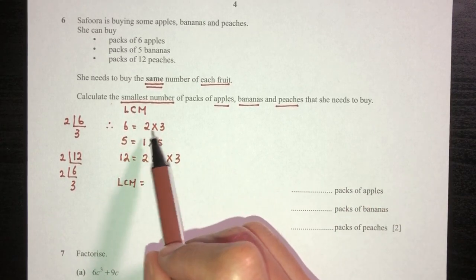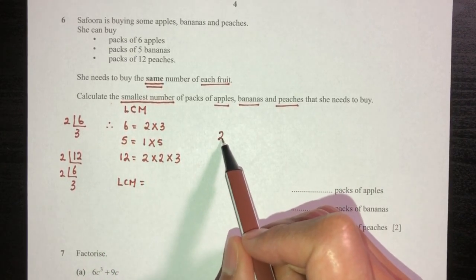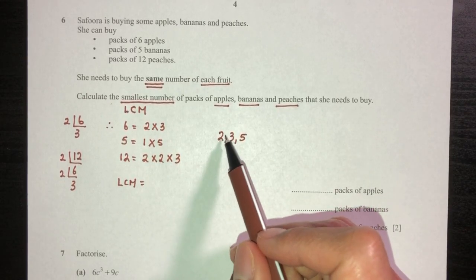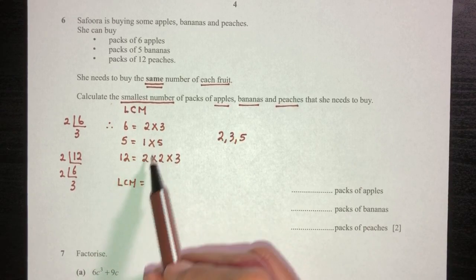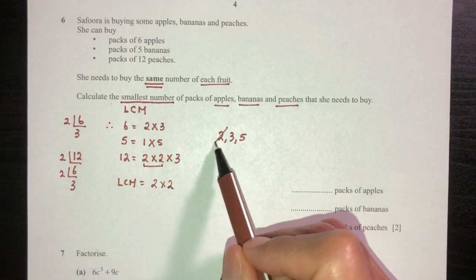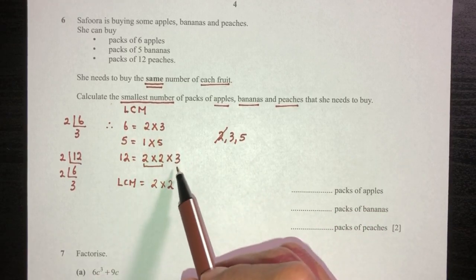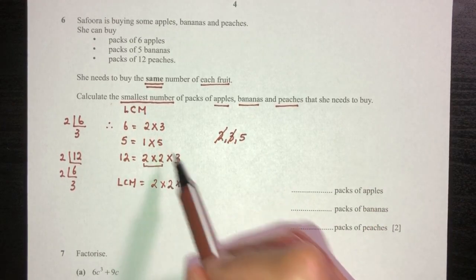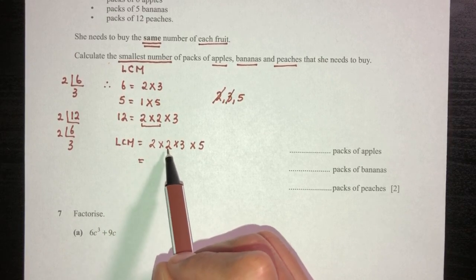Now how do you find the LCM? You have to look at what prime numbers do you have here. You have number two, number three, and number five. For the first one, where does this number happen the most? This one happens once and here happens twice, so we take this one two times two. Now we move on to the next number three - it happens one time here, one time there, so we take only one time. And finally for five, same steps, happens only once, we take five.